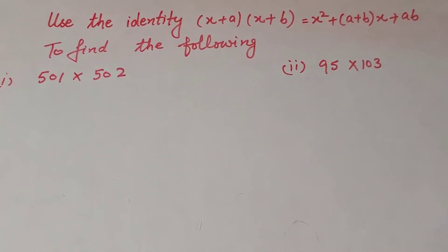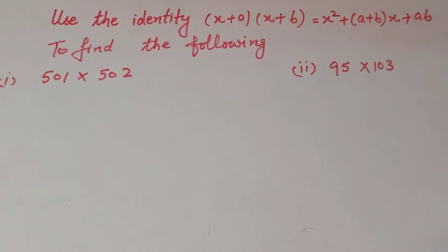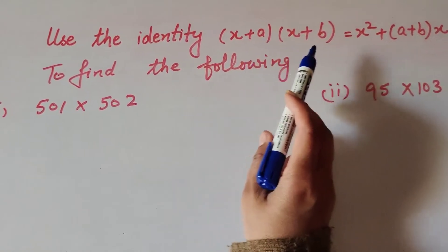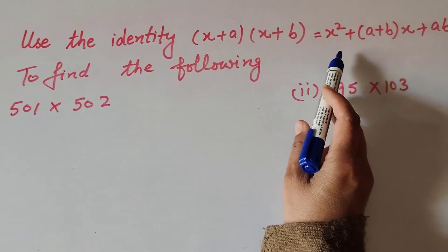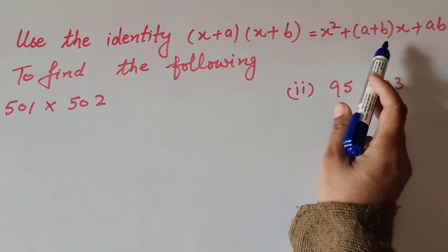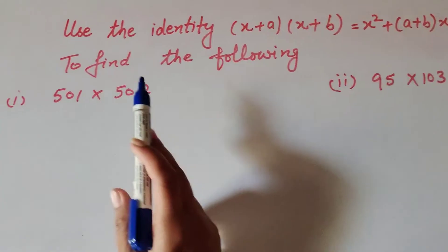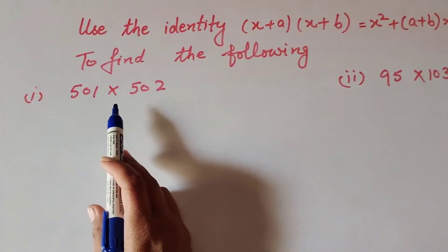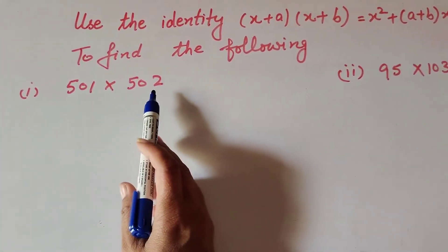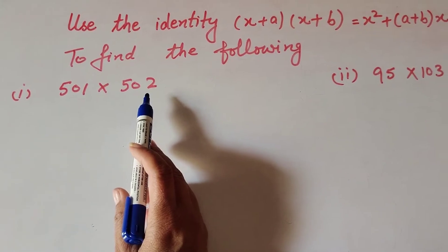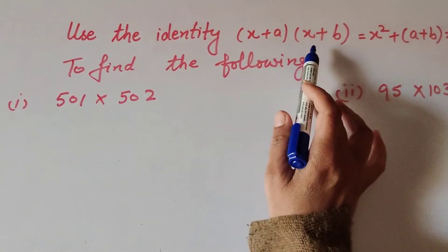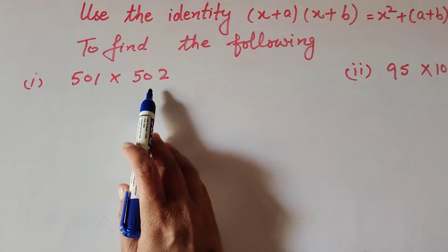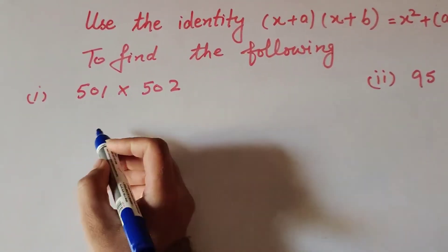Hello friends, welcome to my channel. In this video, we discuss and use the identity (x + a)(x + b) = x² + (a + b)x + ab to find the following. In the first part, 501 multiply 502 — we use this identity to find the product of these two numbers.